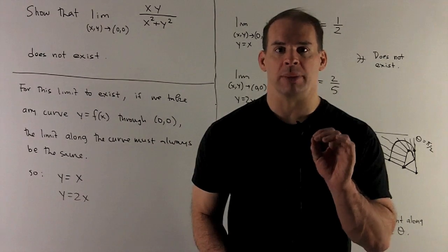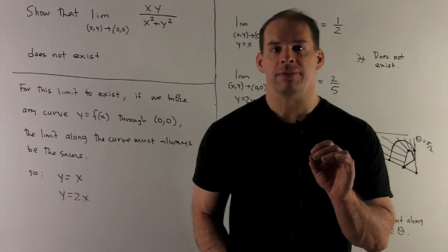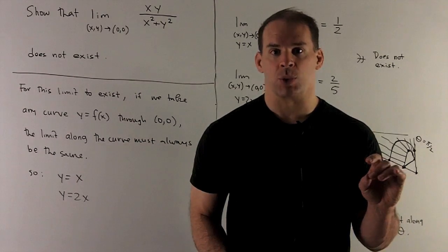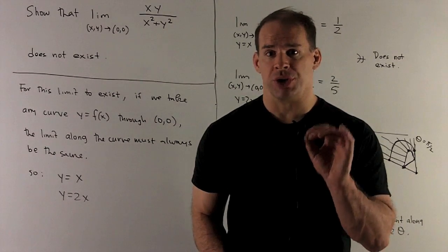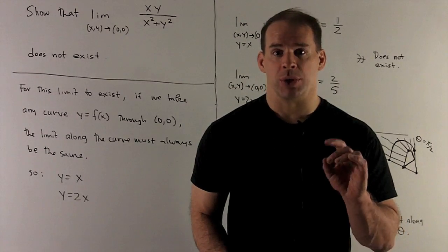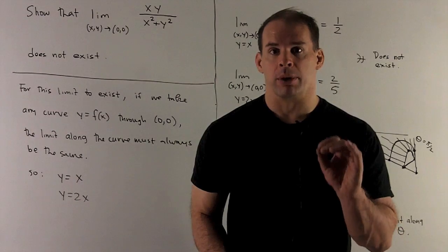Our approach is going to be like this: if this limit exists, I can take any curve in the x,y plane that goes through (0,0). If we take the limit along that curve as we go to (0,0), that's always going to give me the same number.